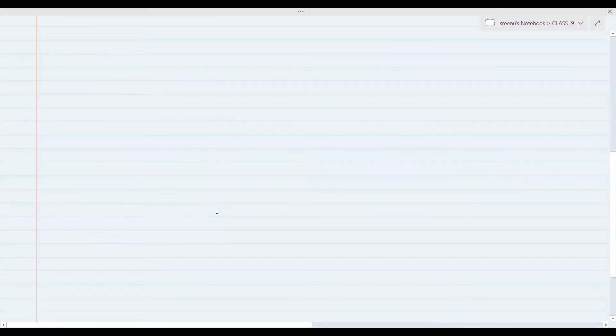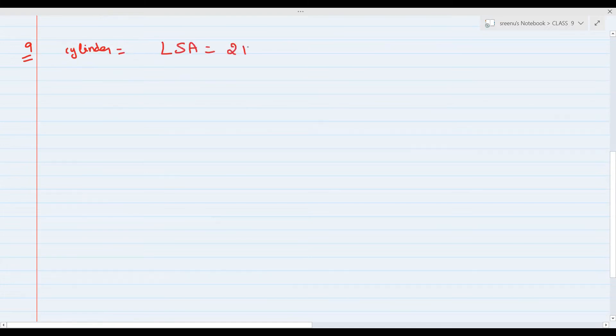9th one you see. Cylinder. Cylinder lateral surface area formula is what? 2 pi r h sir. Very good. So 2 into pi means 22 by 7. What is the value of radius? Here radius is 7. Tell me the answer. 880 centimeters square sir. Okay, right.